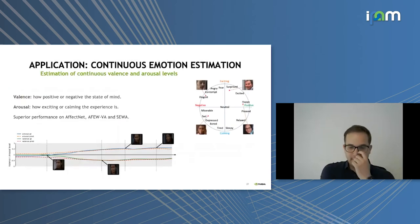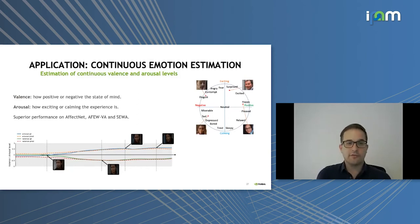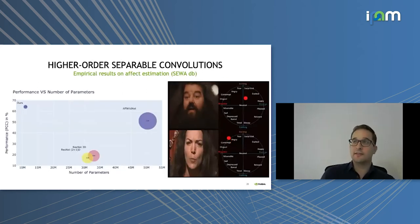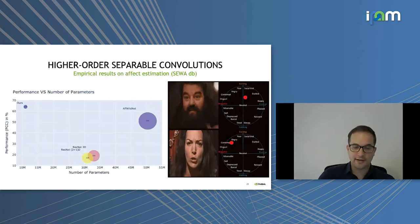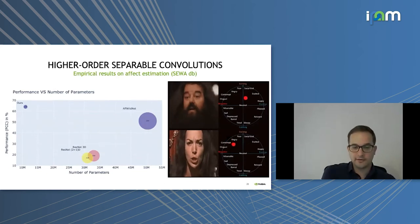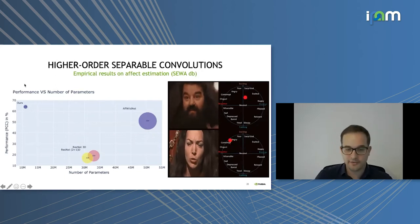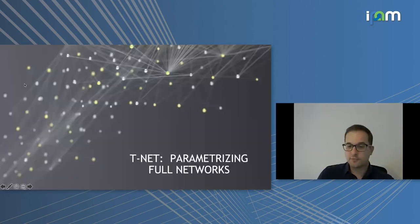We applied this to continuous emotion estimation from images, predicting levels of valence (how positive or negative the state of mind is) and arousal (how exciting or calming the experience is). Given videos of people, we predict their emotional state. One challenge is that while there are many annotated images, there are far fewer annotated videos because expert annotation of each frame is costly. We first trained the network in factorized form on the 2D domain and then applied transduction to generalize to videos, achieving better performance with much fewer parameters.